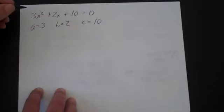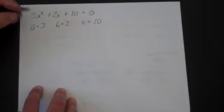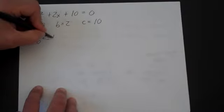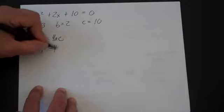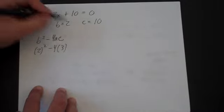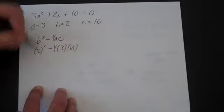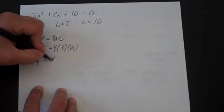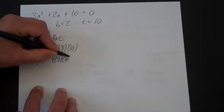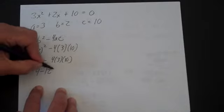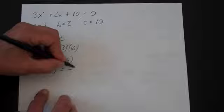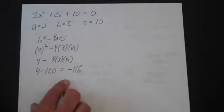And we don't want to solve this, we just want to find the number of solutions. So let's go b squared minus 4ac. So that's 2 squared minus 4 times 3 times 10, which is 4 minus 4 times 3 times 10. That's 12 times 10, that's 4 minus 120 which is minus 116. So the discriminant is minus 116.